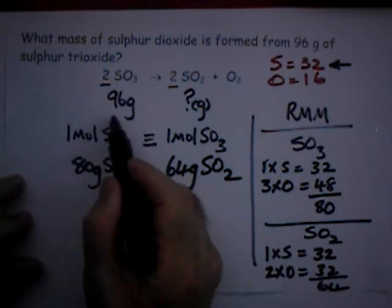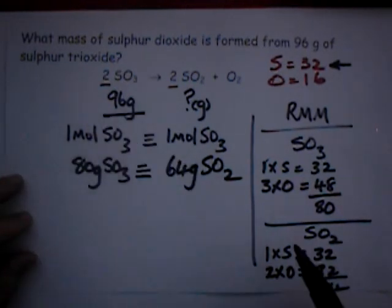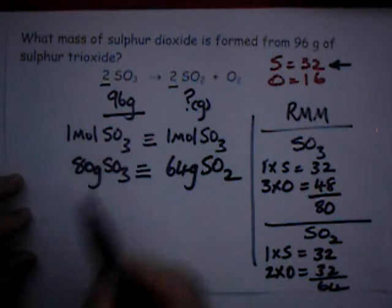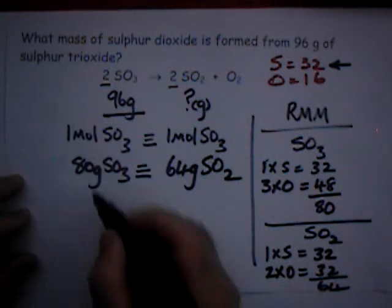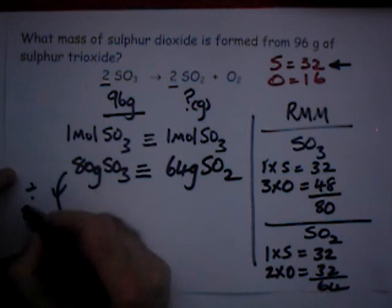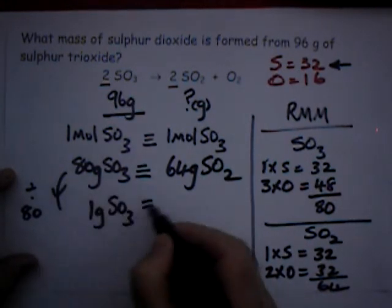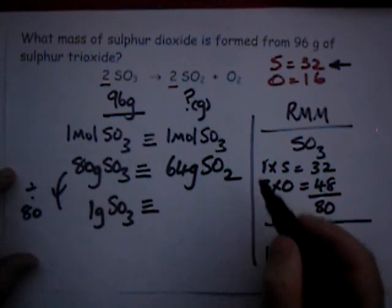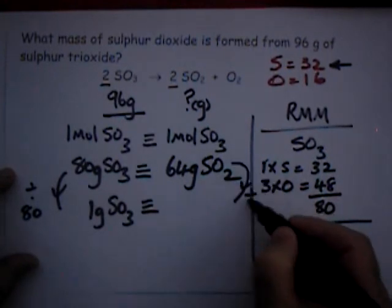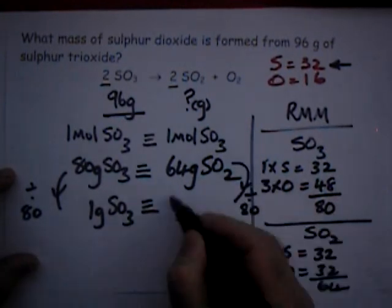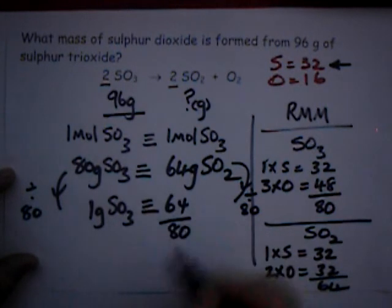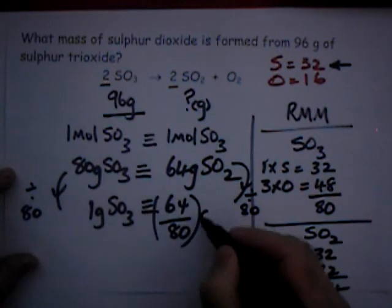And we have to work out what 96 grams would give. Let's work out what one gram of SO3 would give by way of SO2. I'm going to divide this by 80. That will give me one gram of SO3. What you do to one side, you must do to the other. So divide this by 80 as well. So 64 over 80, and that's grams of SO2.